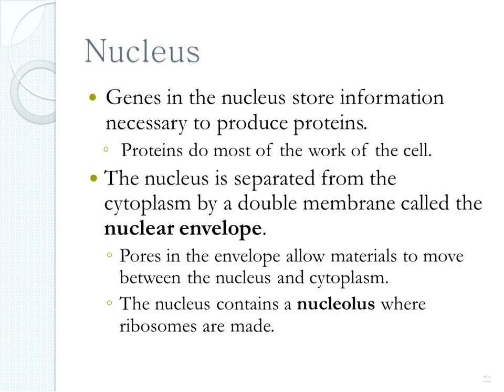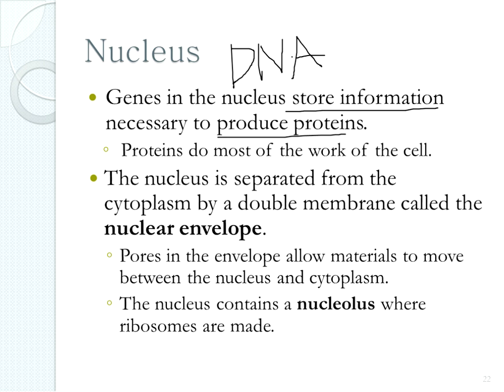The first organelle your book discusses is the nucleus. The macromolecule most often found in the nucleus is DNA, and some RNA — so we have a lot of nucleic acids in the nucleus. These store information and help tell the cell how to make proteins. The nucleus is separated from the cytoplasm by a double membrane called the nuclear envelope, and there are pores in that envelope that allow things to get into and out of the nucleus.